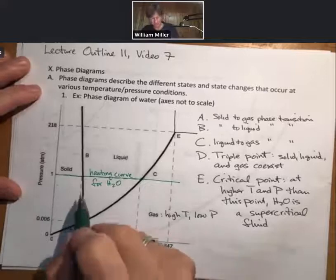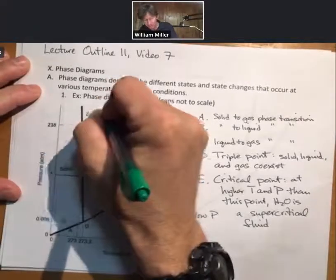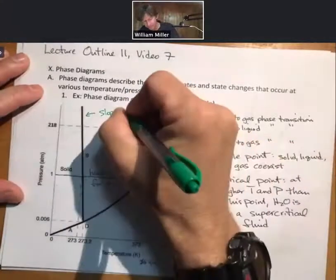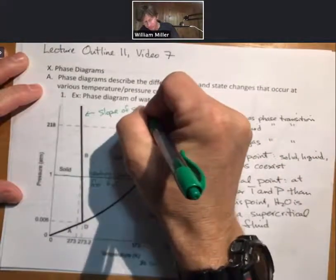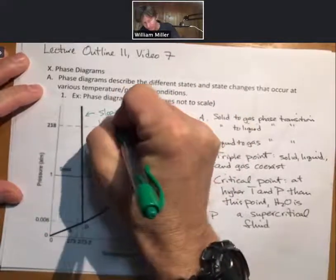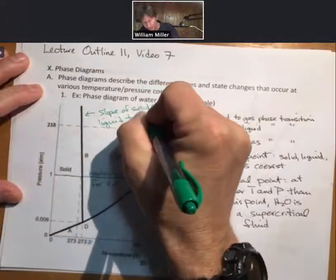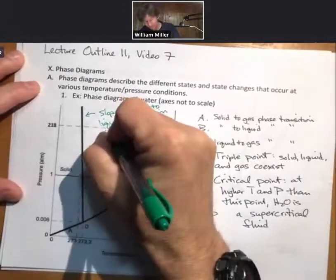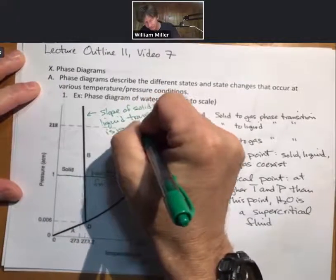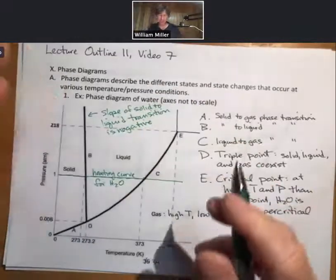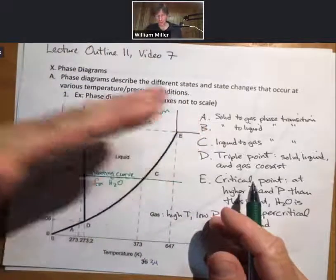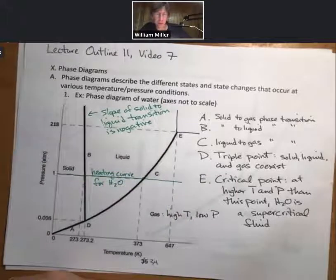The other thing that's interesting about this is that the slope—the slope of the solid to liquid transition—is negative, meaning that this line has negative slope as opposed to a positive slope. So water is almost the only substance we know of that has a negative slope here.